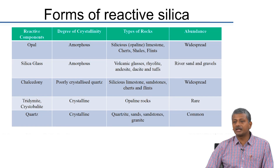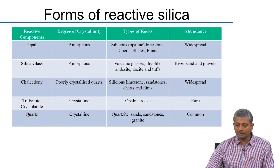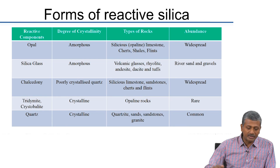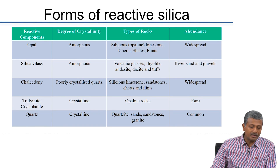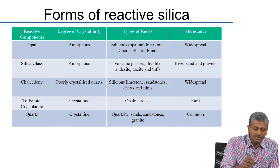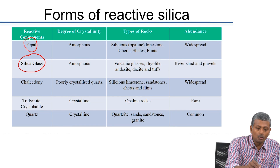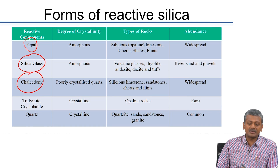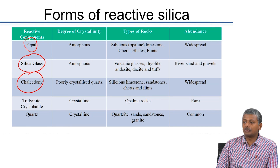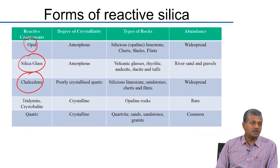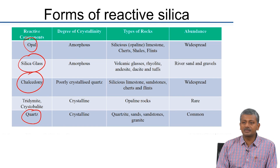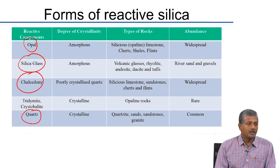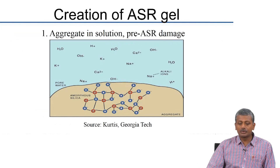This table, repeated from the previous chapter, shows the different forms of reactive components present in aggregate. We are primarily concerned with silica glass, opal, and chalcedony — the main forms present in igneous and sedimentary rocks. When we talk about metamorphic rocks, it is usually quartz present in the strained form that leads to reactivity in the material.